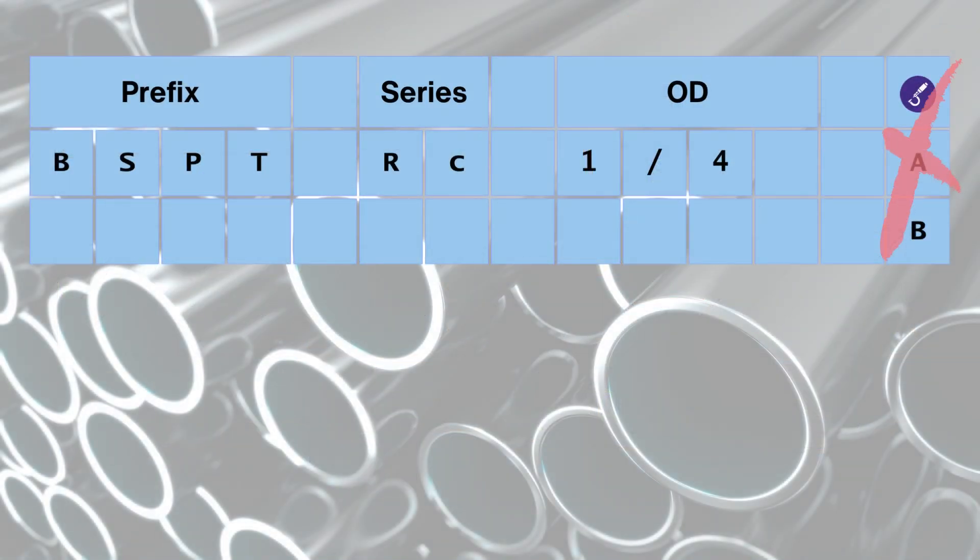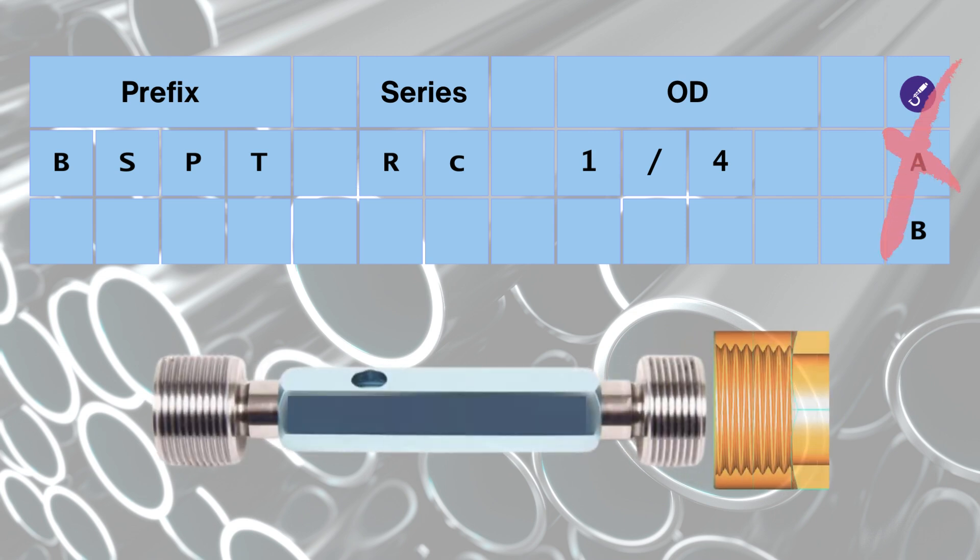BSPT threads don't have different tolerance classes, therefore a class is not part of their description. In addition, most of the dimensions can be inspected only with gauges. The tolerances for the gauges are defined in ISO 7-2 and are outside the scope of this video.